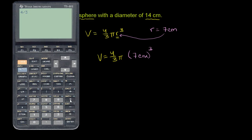So 4 divided by 3 times pi times 7 to the third power. In order of operations, it'll do the exponent before it does the multiplication. So this should work out. And the units are going to be in centimeters cubed, or cubic centimeters.